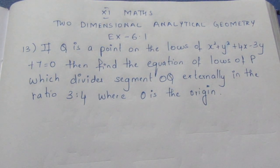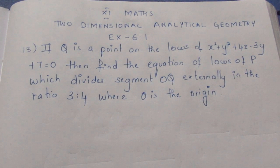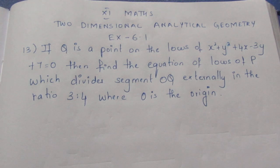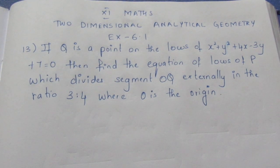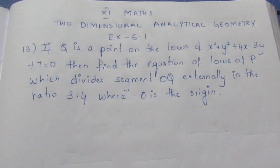If Q is a point on the locus x² plus y² plus 4x minus 3y plus 7 equal to 0, then find the equation of the locus of P, which divides line segment OQ externally in the ratio 3 is to 4, where O is the origin.